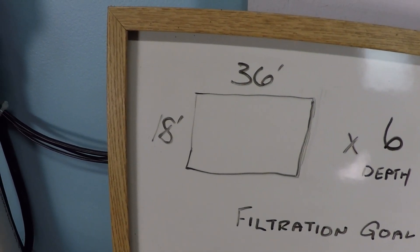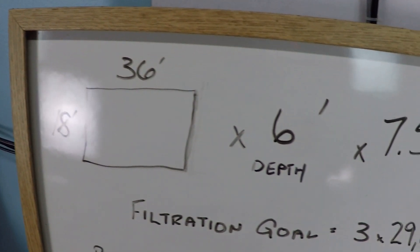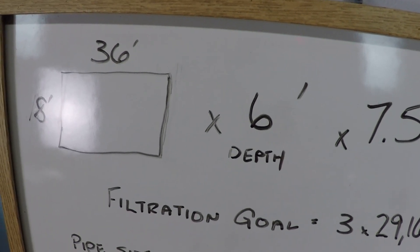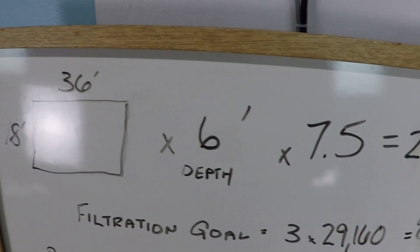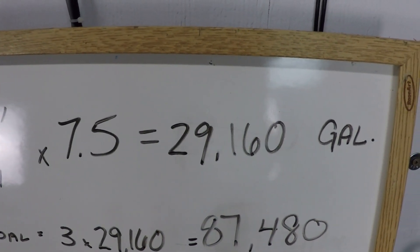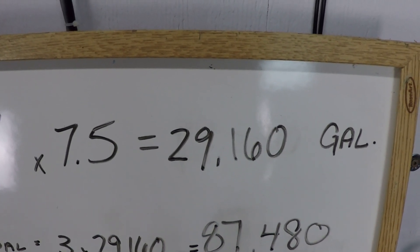In this video, we're looking at a swimming pool that's 18 by 36 with an average depth of 6 feet. That means it has a deep end that's 9 feet or maybe even just a little bit more than 9 feet deep. The volume of the pool is about 29,160 gallons.